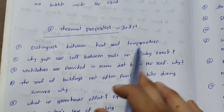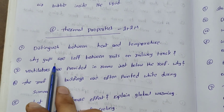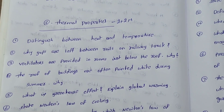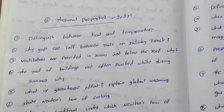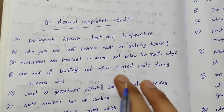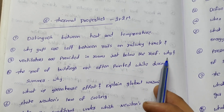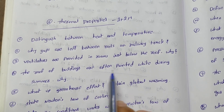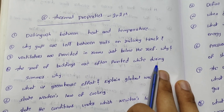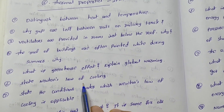Distinguish between heat and temperature. Why are gaps left between rails on a railway track? Ventilators are provided in rooms just below the roof — why? What is the greenhouse effect? Explain global warming. The roofs of buildings are often painted white during summer — why? State Newton's law of cooling.